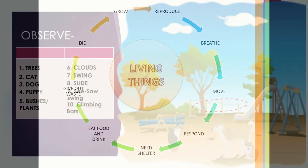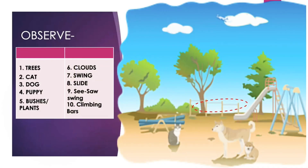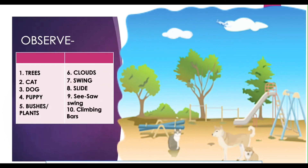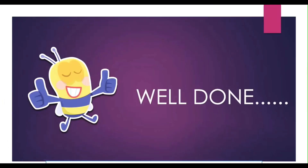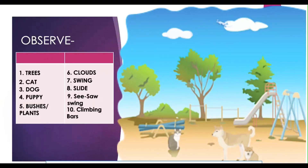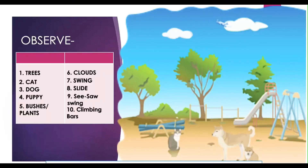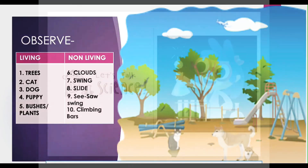Now that you know the features of living things, let's come back to the picture and the list we made in the beginning. Can we sort these things? Trees, cat, dog, and puppy are living things. Clouds, swing, and climbing bars are non-living things.